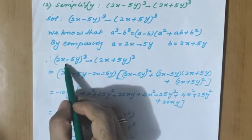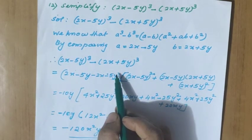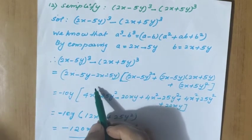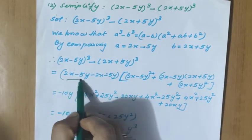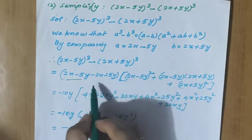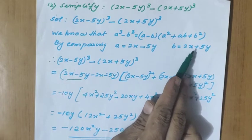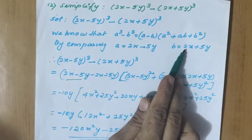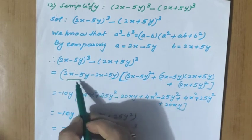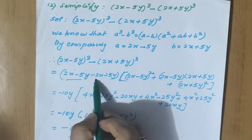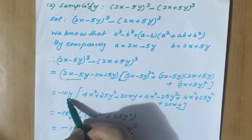So we can write now: 2x minus 5y whole cube minus 2x plus 5y whole cube equals a minus b. Here a is 2x minus 5y and minus b means minus 2x plus 5y, which gives minus 2x minus 5y. So what happens in this bracket? The 2x terms get cancelled. So minus 5y minus 5y becomes minus 10y.